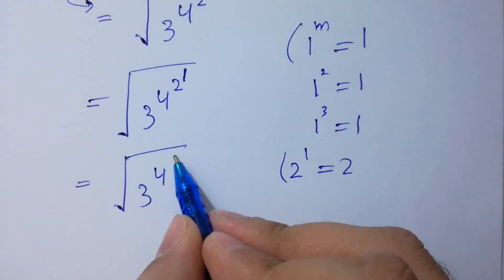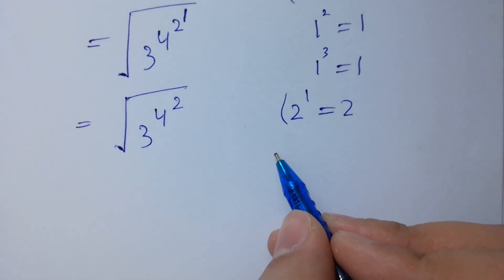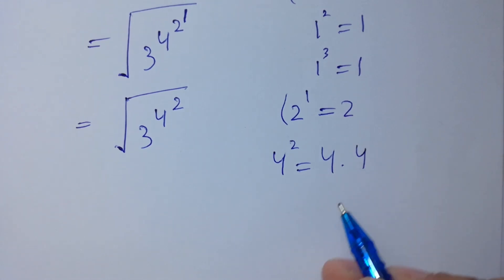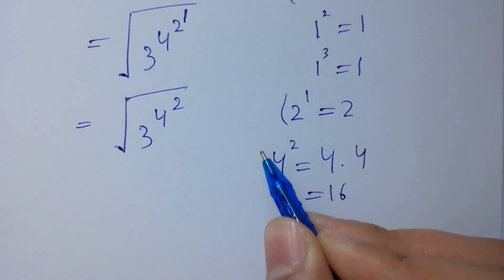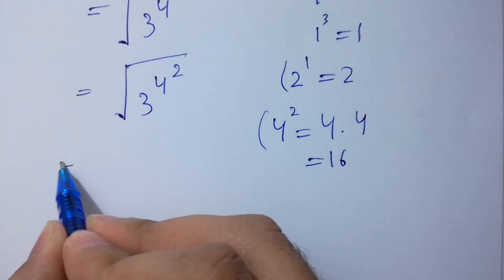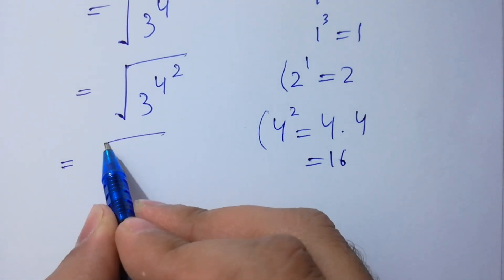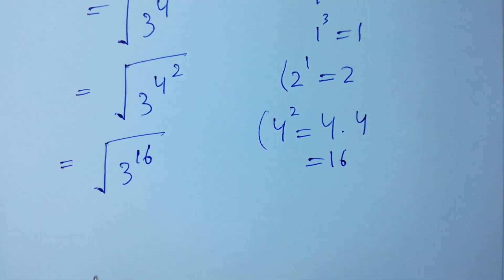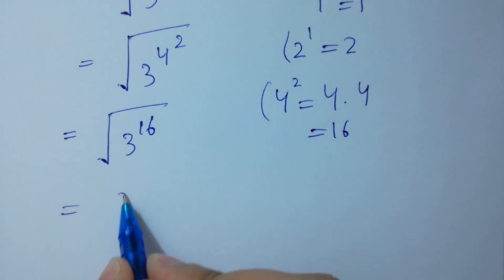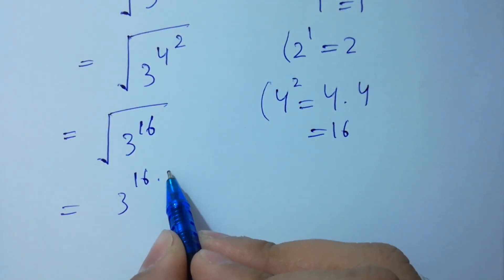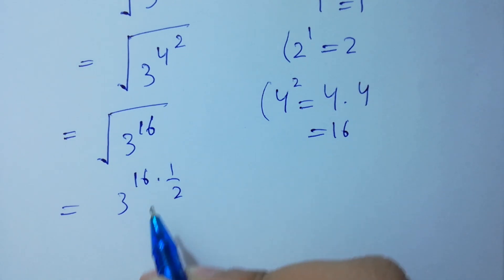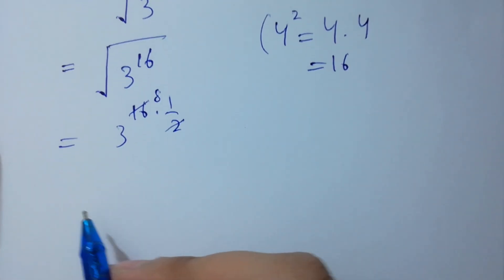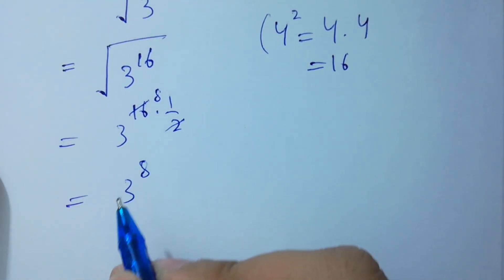Next, 4 squared equals 4 times 4, which is 16. So we have the square root of 3 to the power 16. The square root is the same as the exponent one-half, and 16 times one-half is 8, giving us 3 to the power 8.